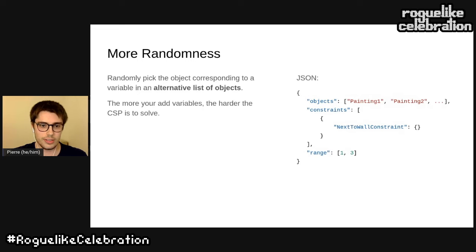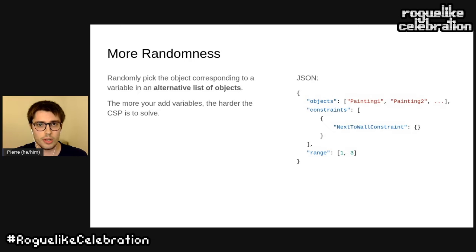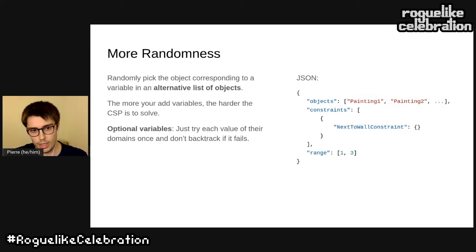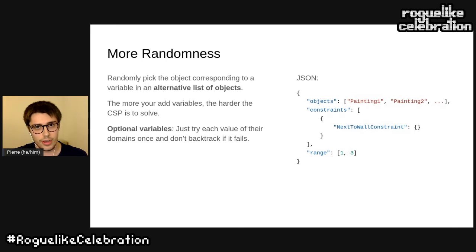The more variables we add, the harder the problem is to solve. But for some objects like decorations, if the solver fails to place them it's not a big deal — the room stays valid. So I separate objects into two groups: required objects, where if the solver fails to place them the room loses its meaning, so I use the full backtracking algorithm to ensure placement; and optional objects, which I place after the required ones by trying each value in the domain once. If the solver fails, I don't backtrack — I just move to the next optional object.